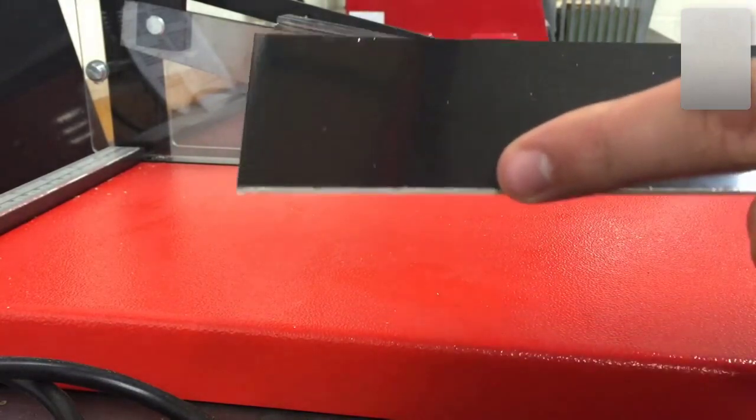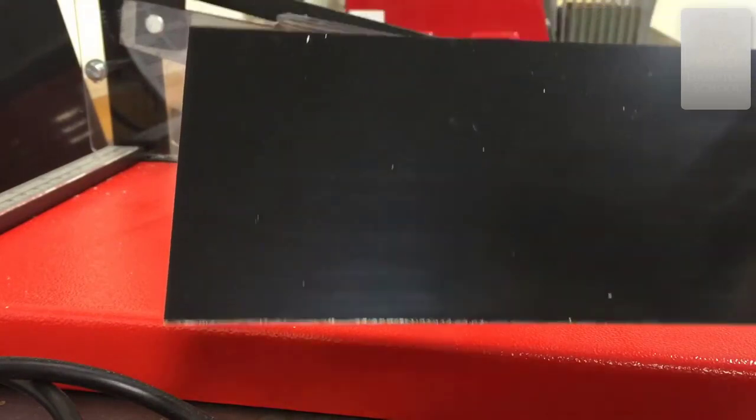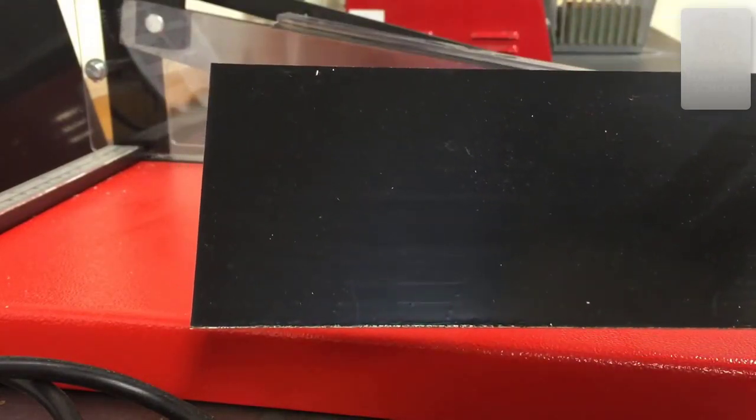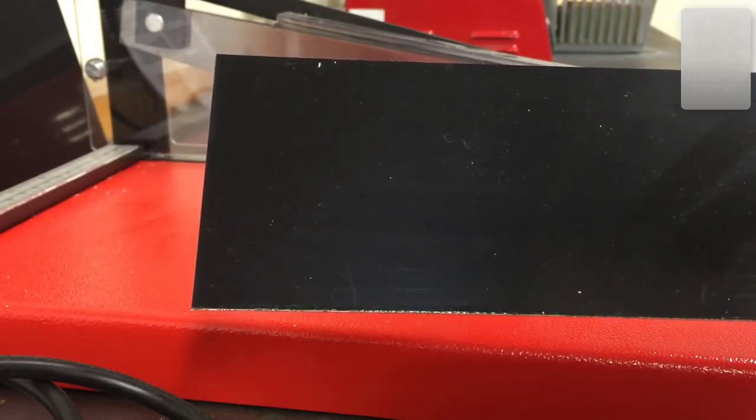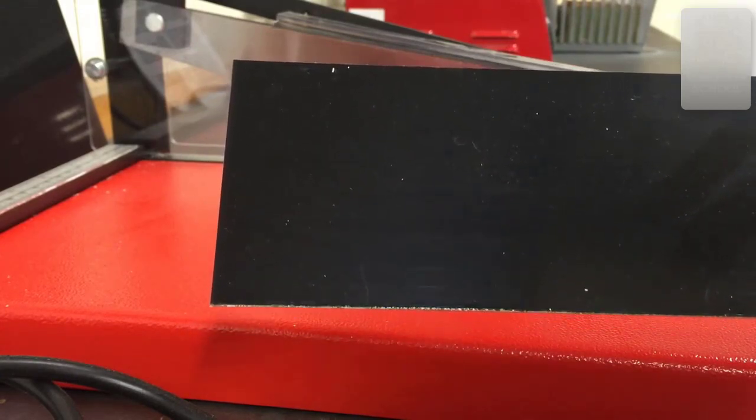On top of the copper is a substance called photoresist. This will be broken down by ultraviolet light and is then able to be removed by the developer. Where no ultraviolet light shines onto the photoresist, it will stay behind and protect the copper from the etchant.